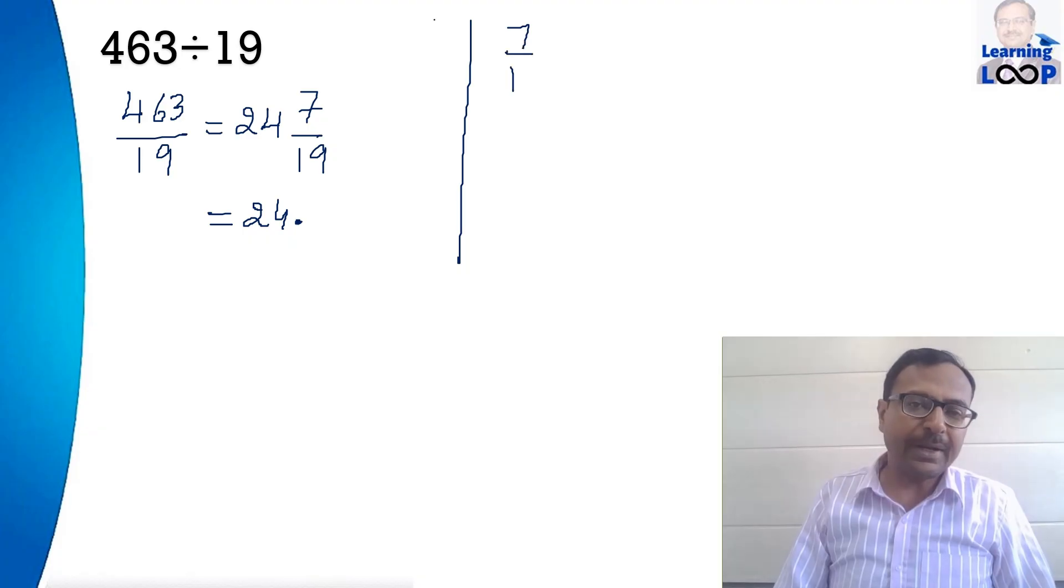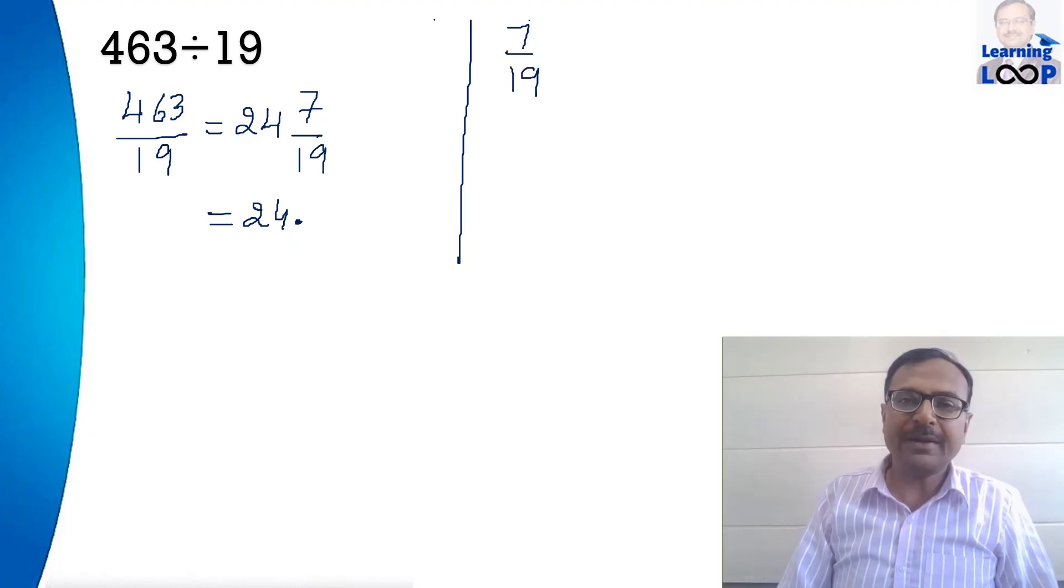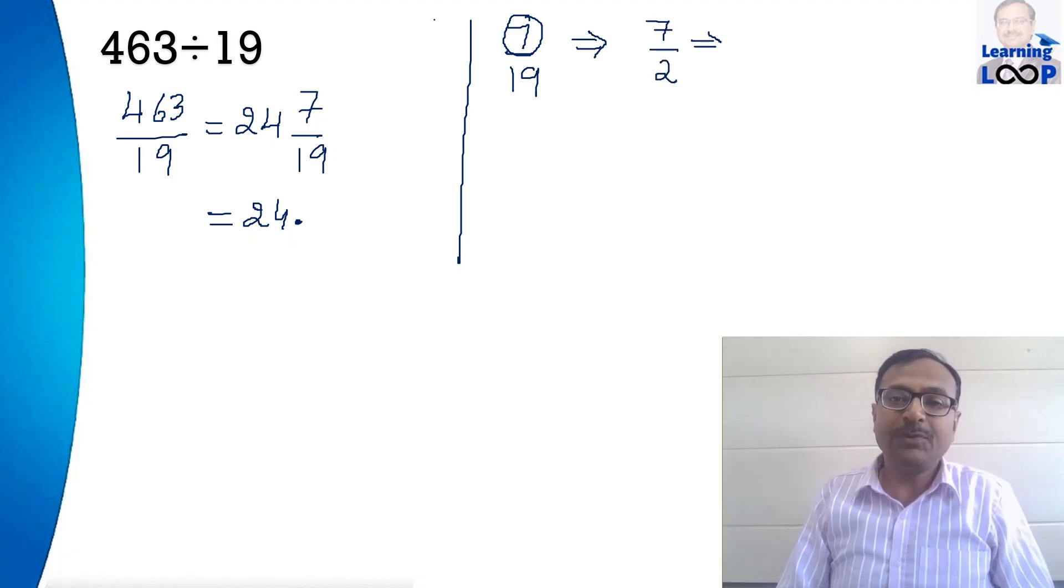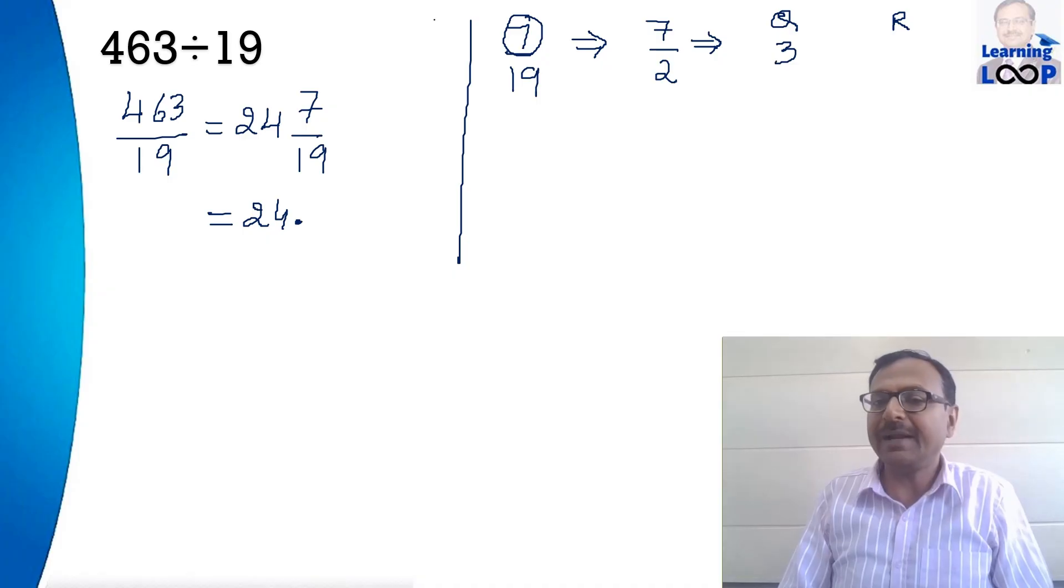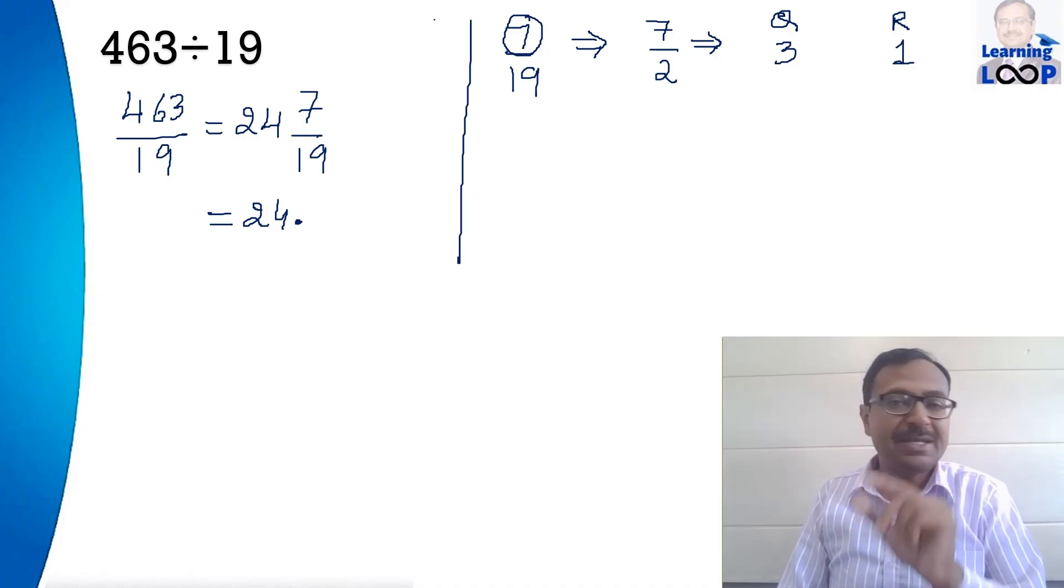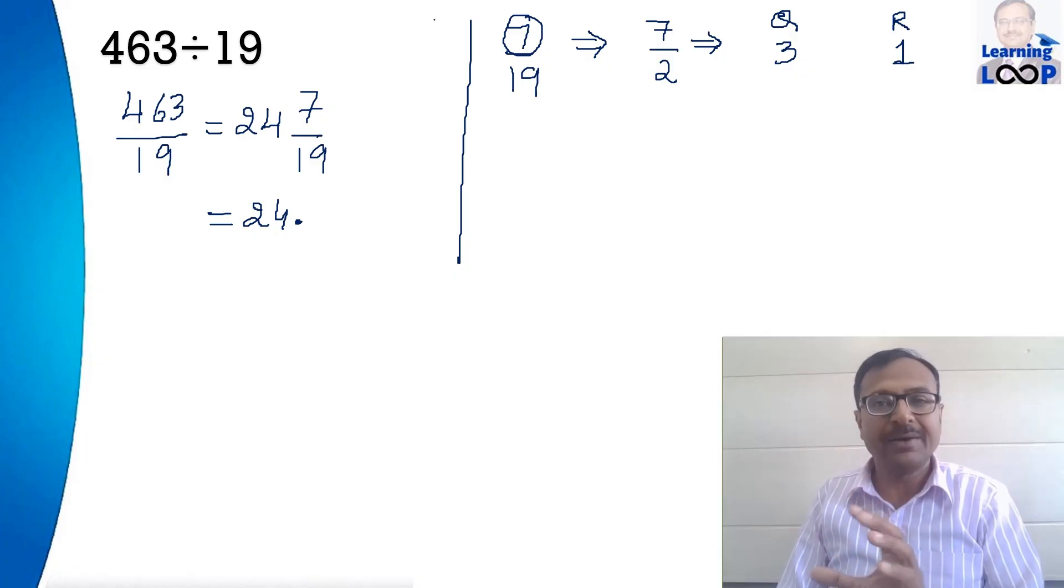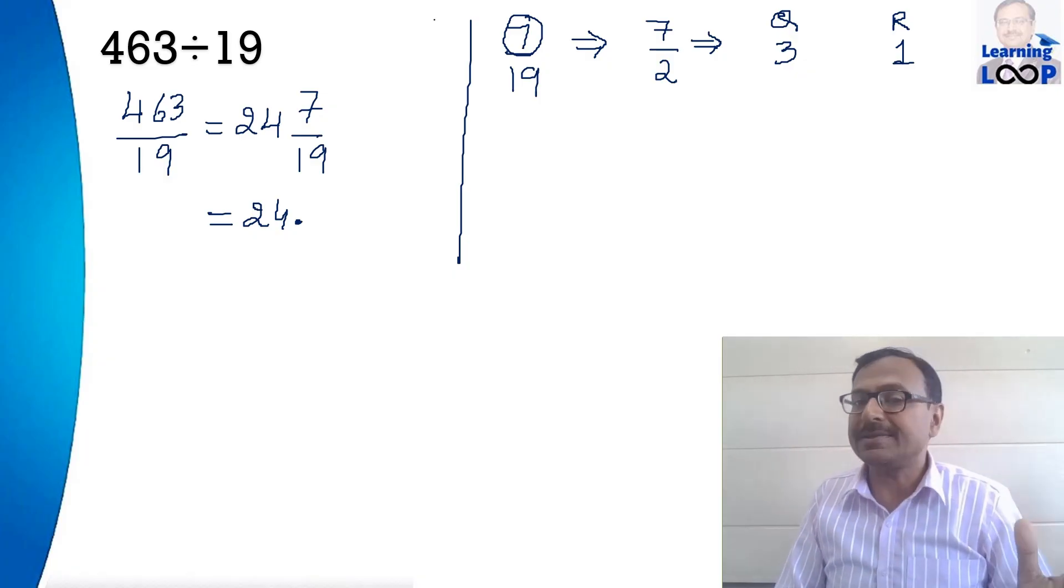So 7 upon 19 has the numerator 7. So the first thing you are going to do is to take half of 7 and if you divide 7 by 2 you will get a quotient and a remainder. The quotient will obviously be 3 and the remainder will be 1.